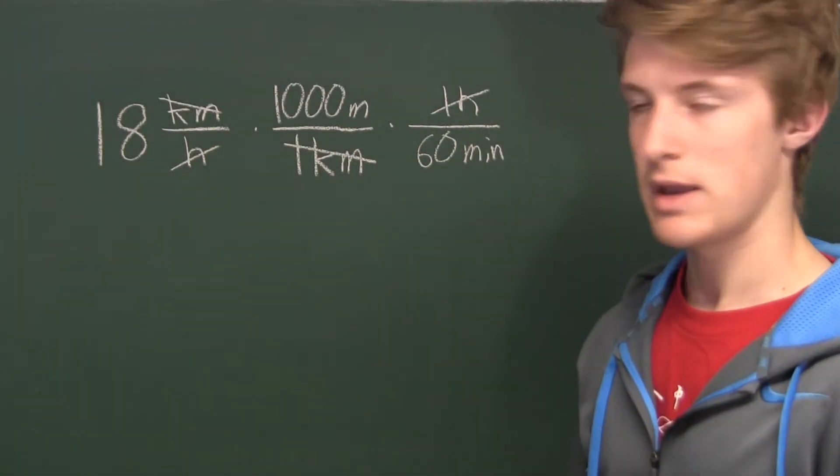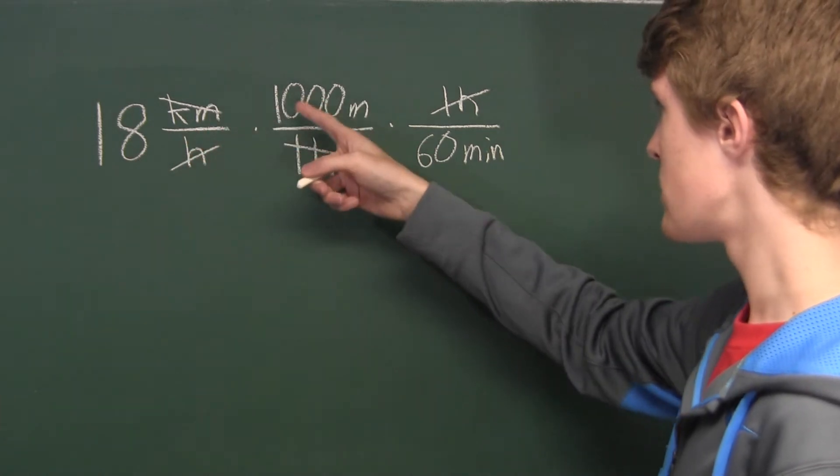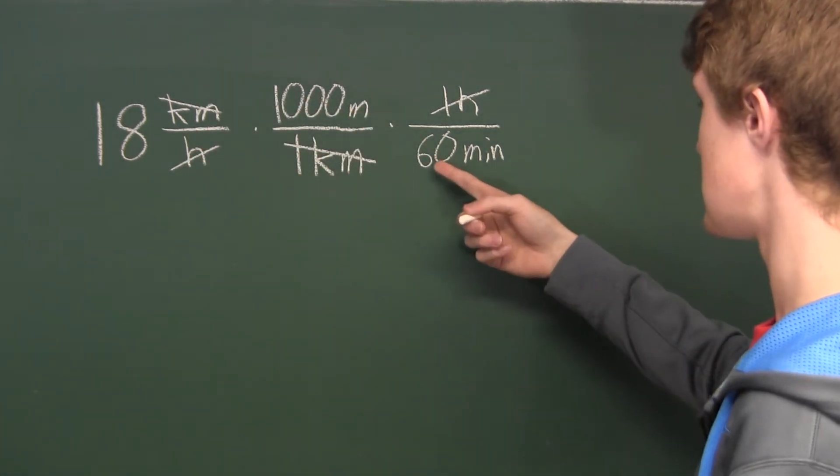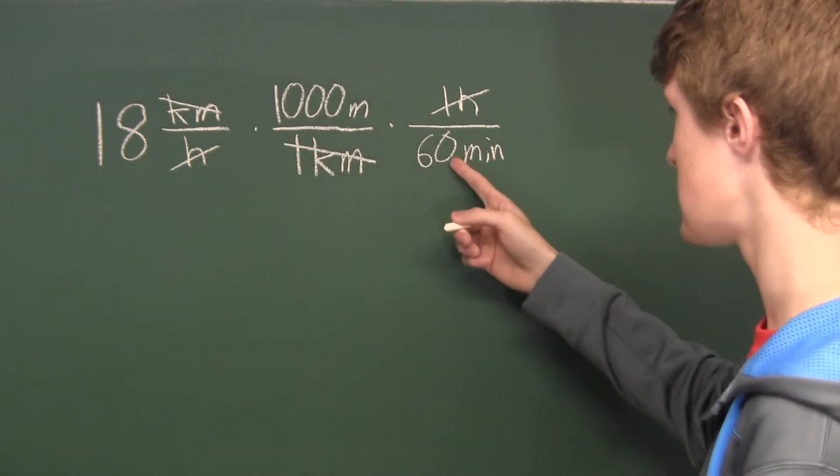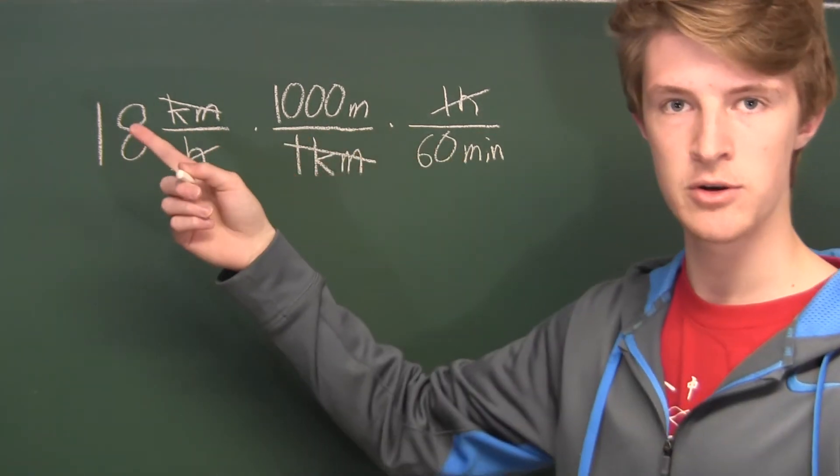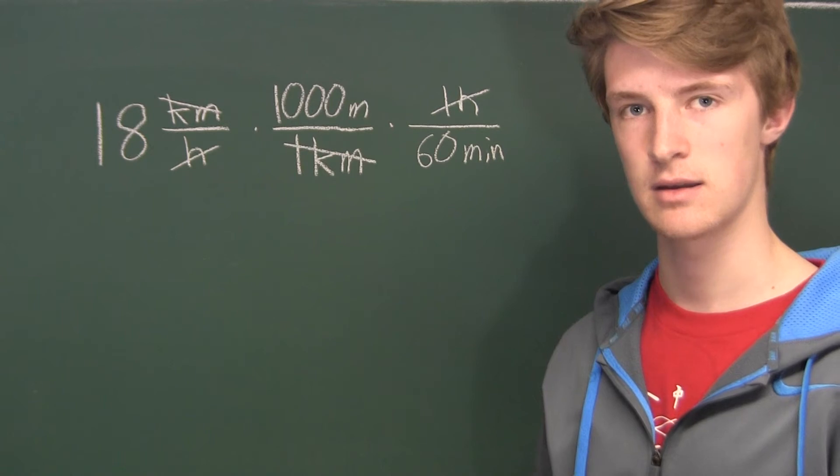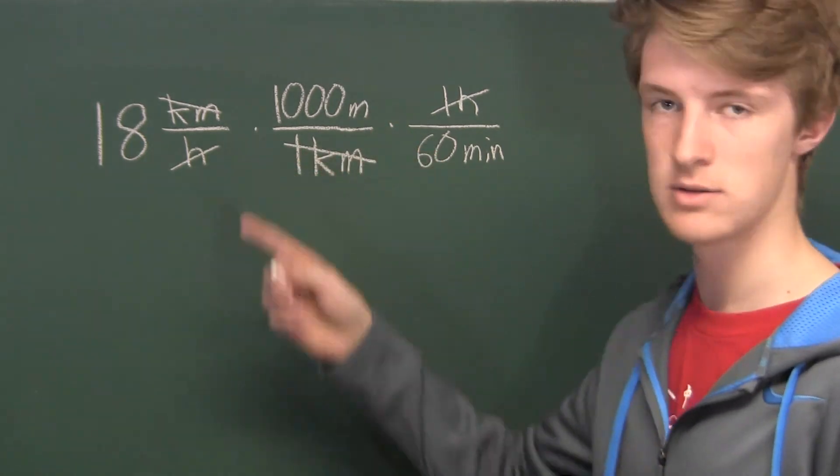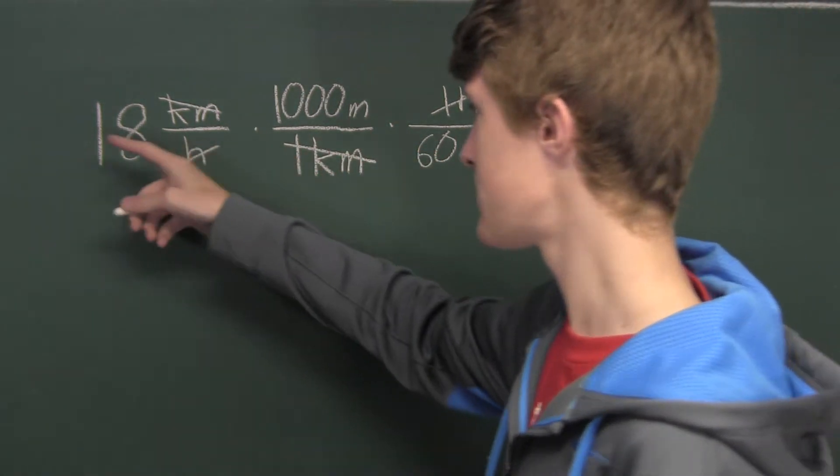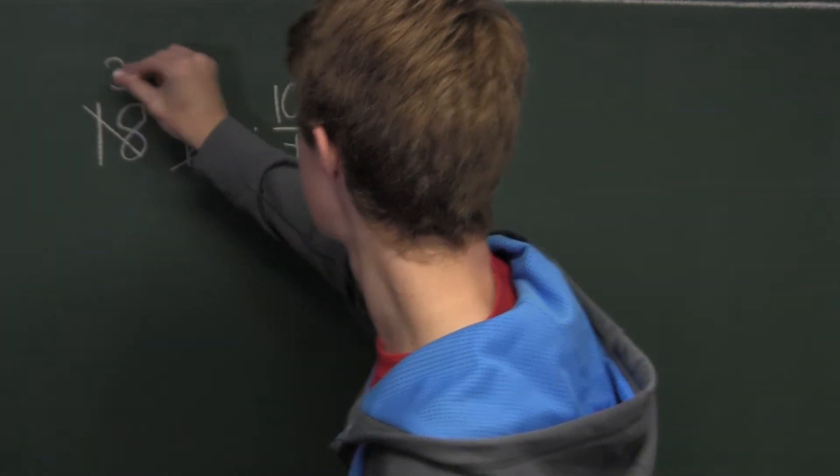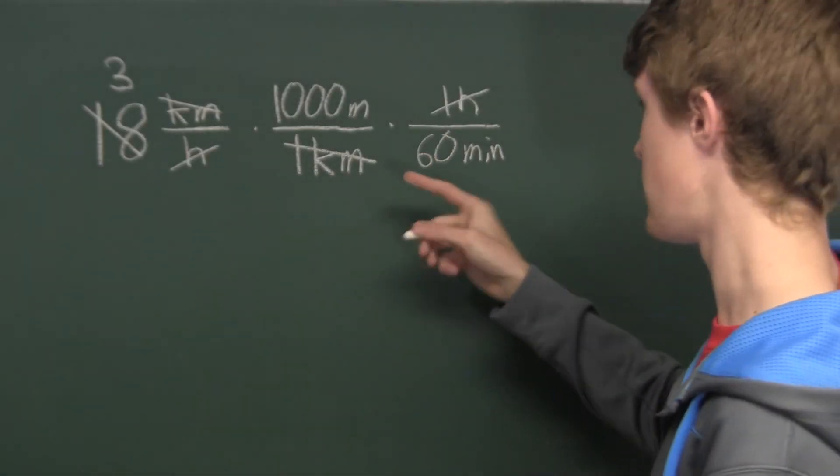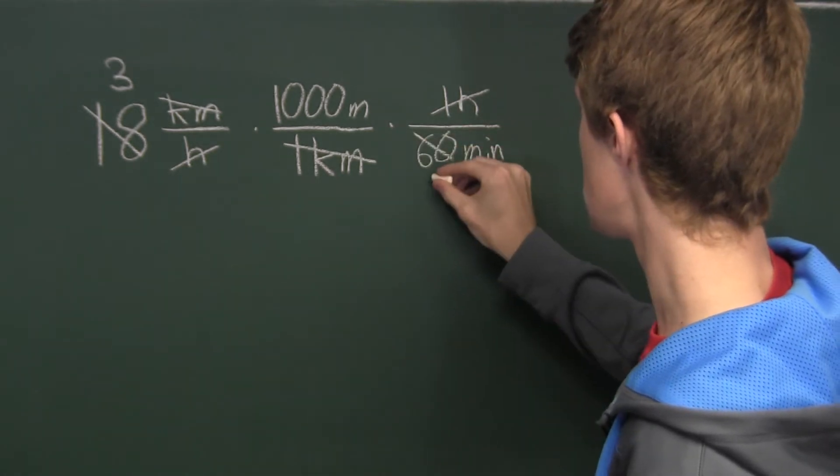Now what we have left is the 18, the 1,000 meters, and the 60 minutes. Let's look at the 18 and the 60. Both of those numbers have a common factor of 6, so we will divide both of those numbers by 6. Well, 18 divided by 6 is 3, and 60 divided by 6 is equal to 10.